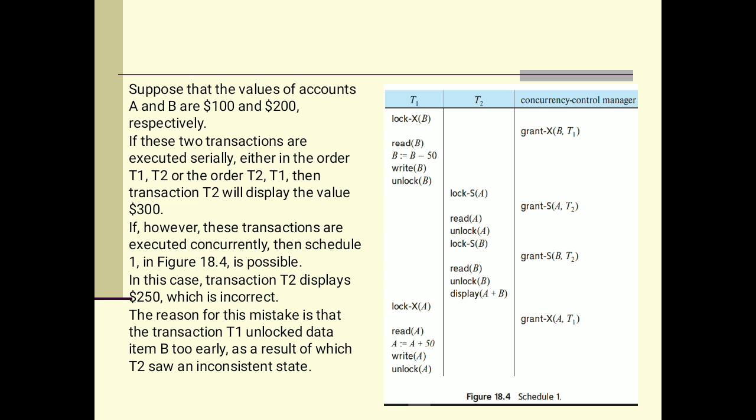Let us see. First T1 will be executed. It will lock account B. We have 200 rupees in account B. Then read B, B is equal to B minus 50. 200 minus 50 is equal to 150. We have updated the database, so B account now has 150. We have unlocked the account. Then T2 transaction will get executed. Lock S(A), read A.